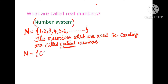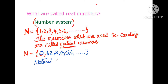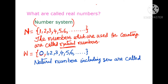So natural numbers N = {1, 2, 3, 4, 5, 6, ...}. Next, whole numbers: natural numbers including zero are called whole numbers. The first letter of whole number is W, so the set of whole numbers is represented by W.